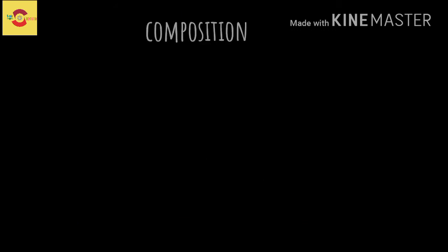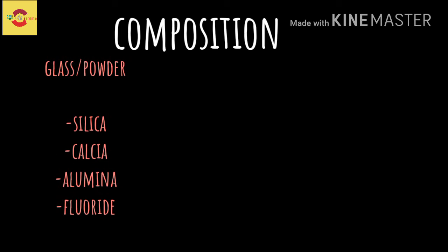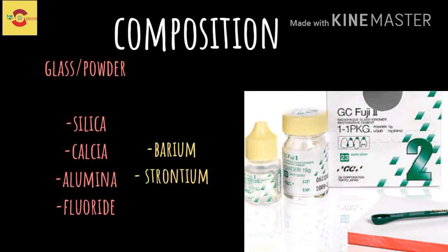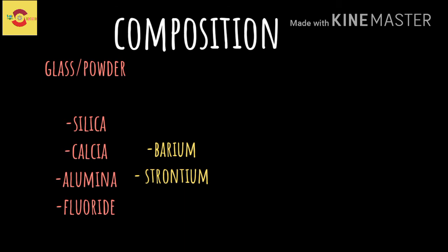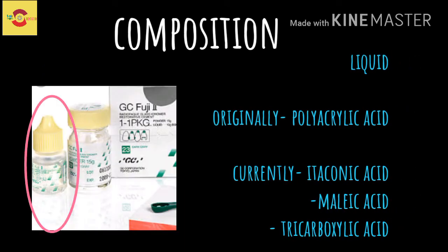GIC contains a powder and a liquid composition. The powder, or glass composition, is basically made up of silica, calcium alumina, and fluoride. Barium and strontium or other high atomic number metal oxides are added to the glass to increase the radio-opacity. The liquid composition originally consists of aqueous solutions of polyacrylic acid.